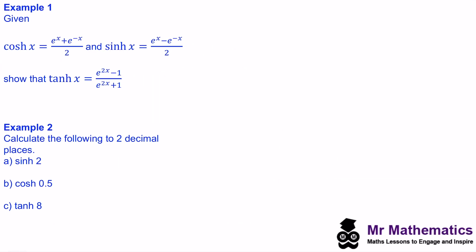In Example 1, we've been given cosh(x) and sinh(x) and we've been asked to show tanh(x). These are quite similar to the unit circle functions in trigonometry where we have tan(x), but this time tanh(x) is equal to sinh(x) over cosh(x).